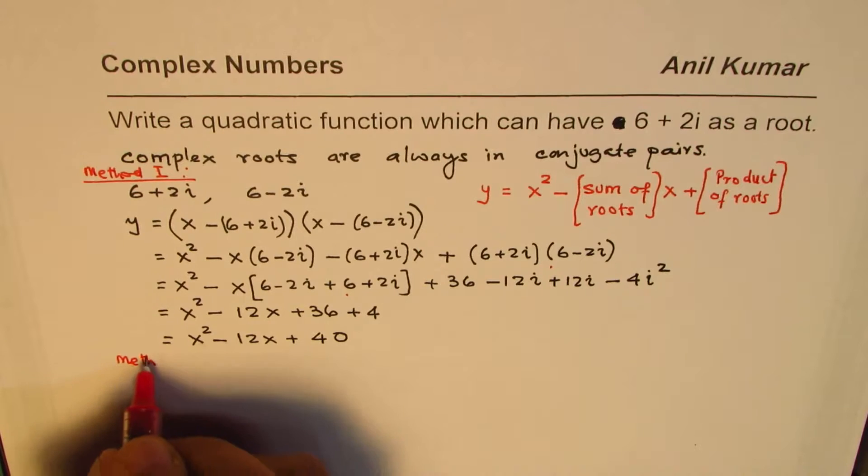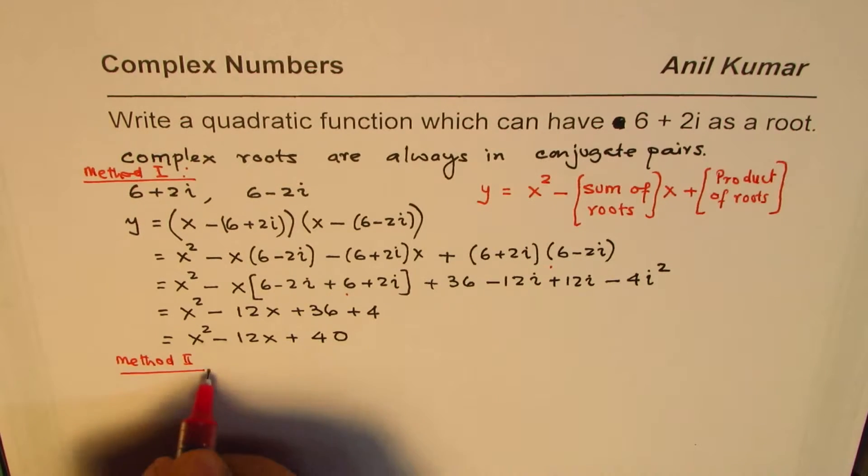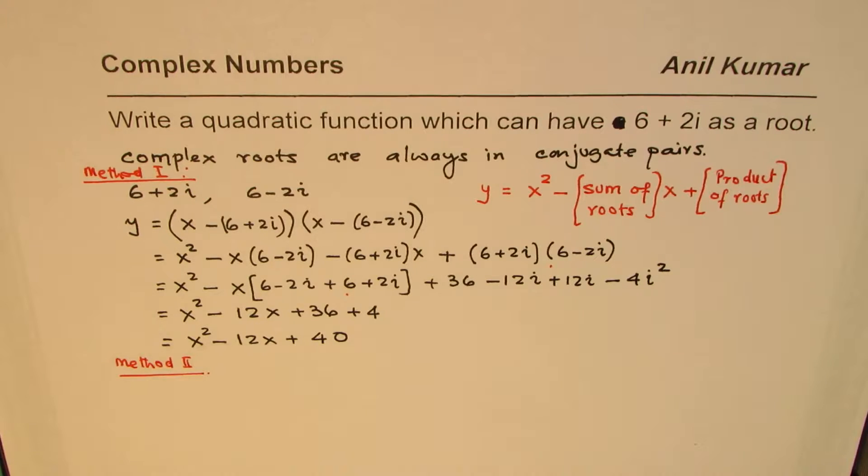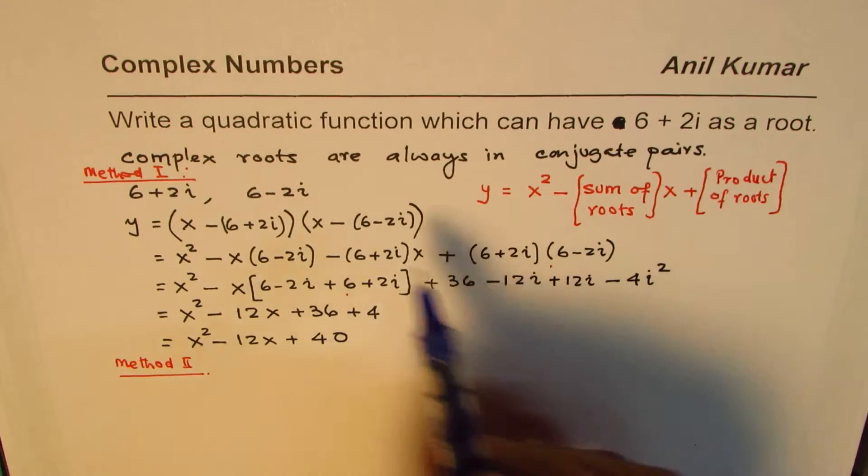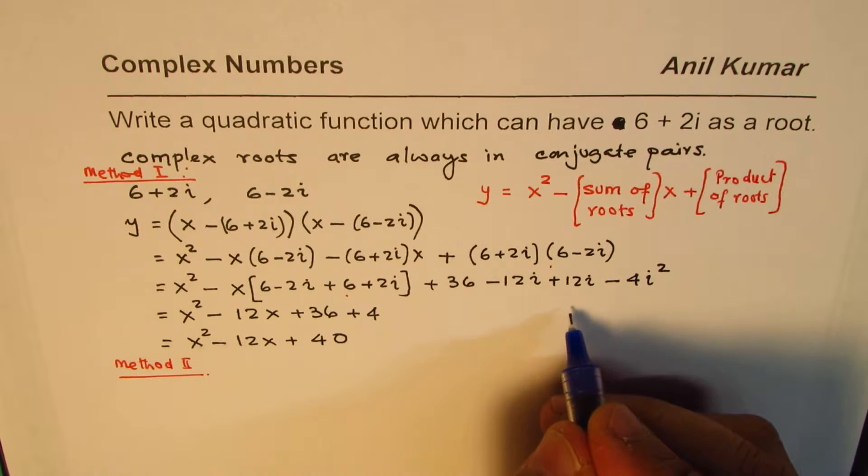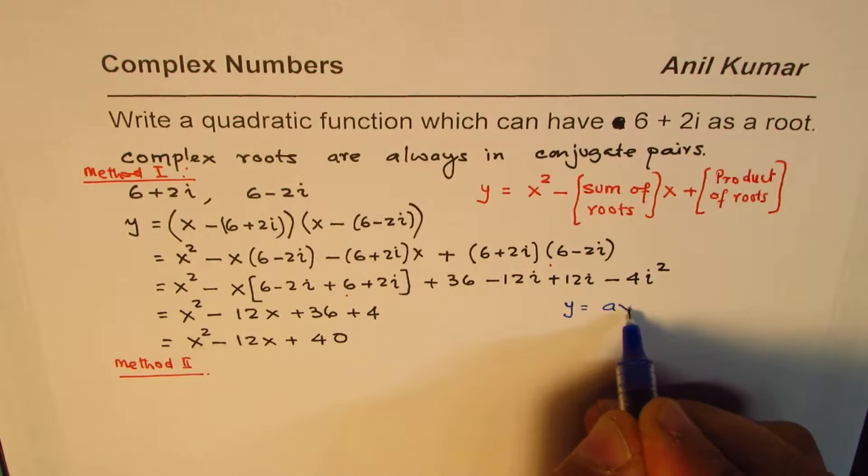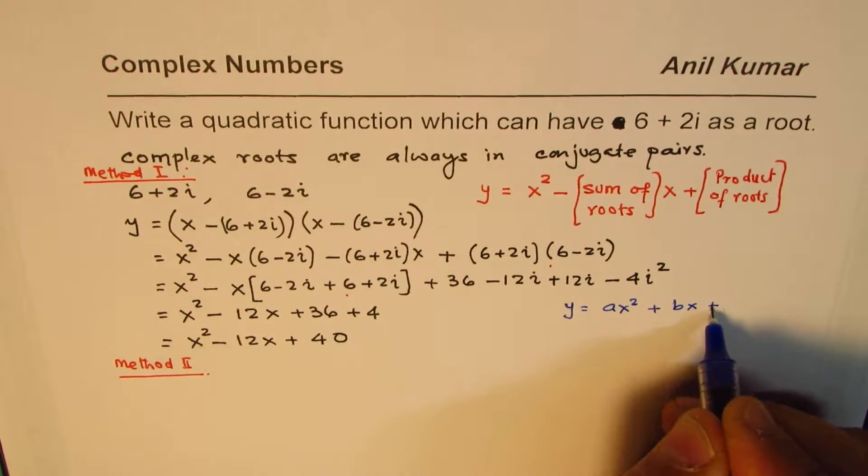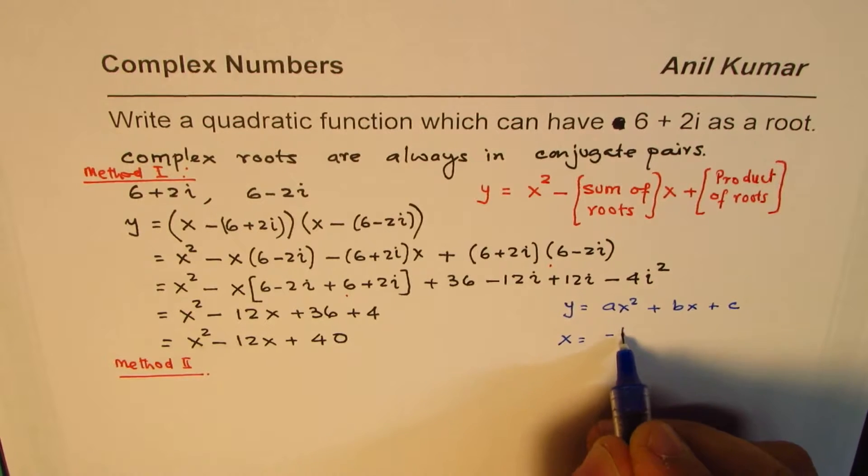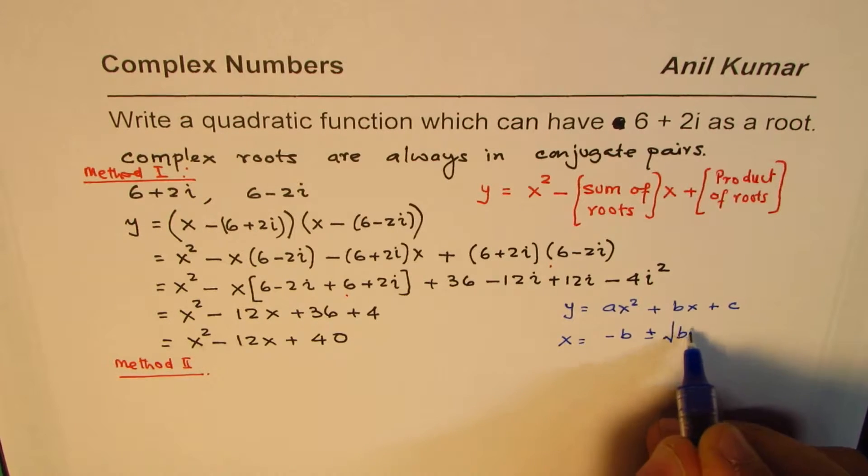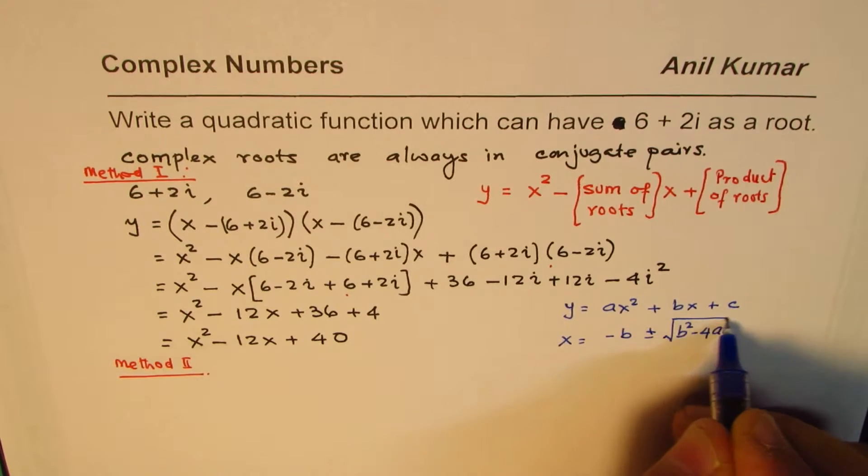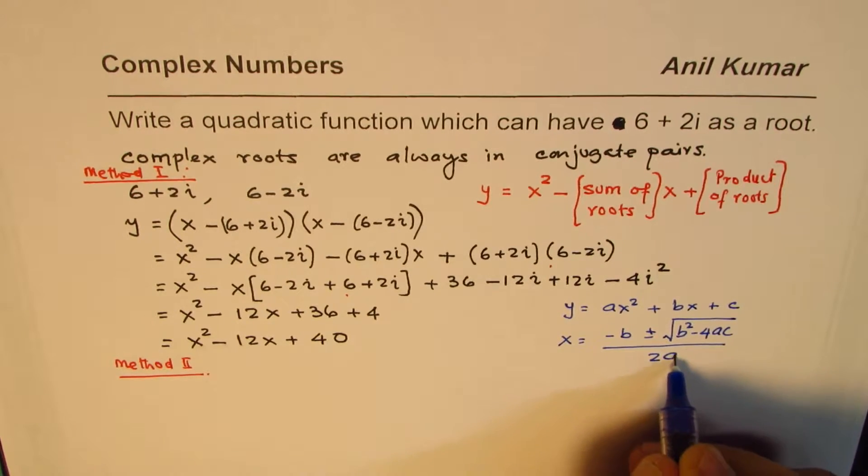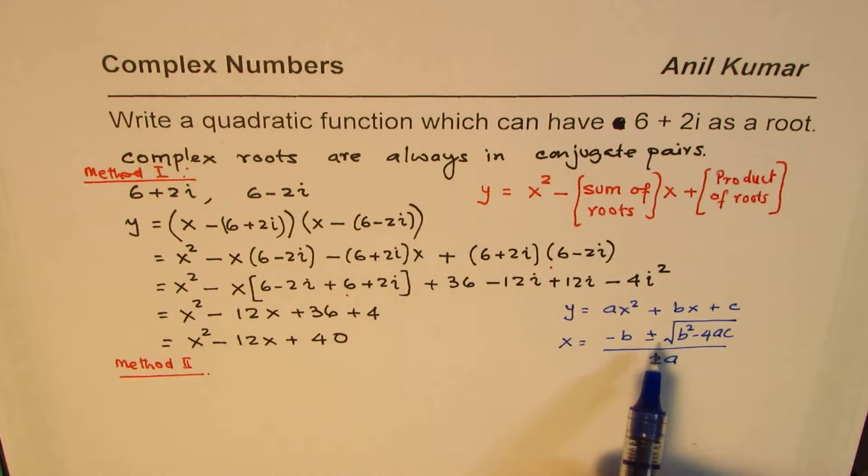Now, let me share the second method. In the second method, I like to draw your attention to the roots of quadratic equation. If the equation is y equals to ax square plus bx plus c, then what are the roots? Then x is equals to minus b plus minus square root of b square minus 4ac divided by 2a. Correct? Now, we need to find this quadratic equation. We are given the value of x, the roots, correct?